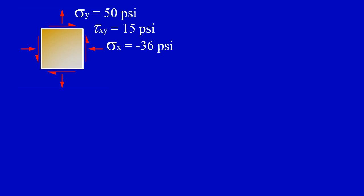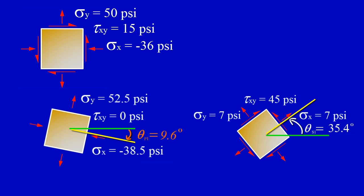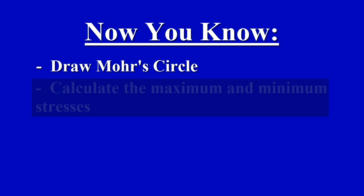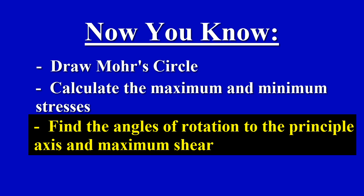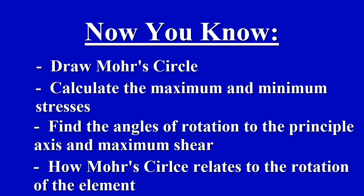This video looked at an element with normal and shear stresses given. Using Mohr's Circle, the principal angle and the principal stresses were found and applied to the element. Then the maximum shear angle and stresses were found and applied to the element. Watch this video again to remember how to draw Mohr's Circle, calculate the maximum and minimum stresses, find the angles of rotation to the principal axis and the maximum shear, and how Mohr's Circle relates back to the rotation of the element.